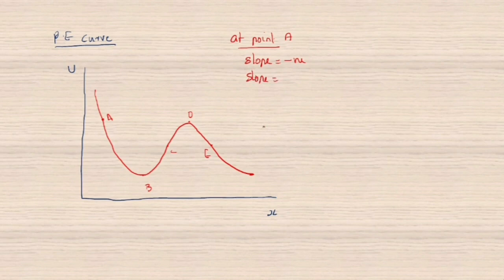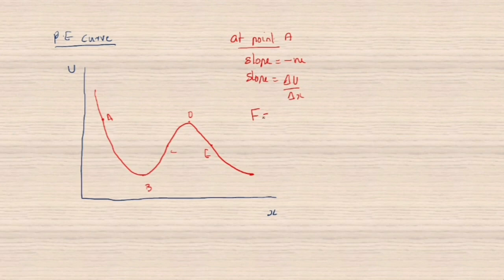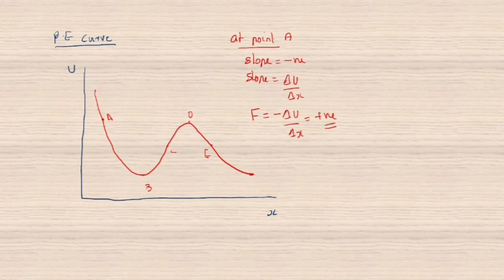The slope equals ΔU/Δx, which is negative at point A. Since F = −ΔU/Δx and the slope is negative, the force becomes positive. A positive force means a repulsive force is acting there.